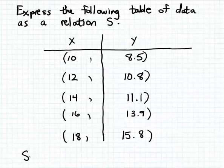We do that by writing S equals, because we want to call this relation S. Remember, a relation is a set, so I'm going to enclose the elements of my set in curly braces, and the elements of this set are the ordered pairs.